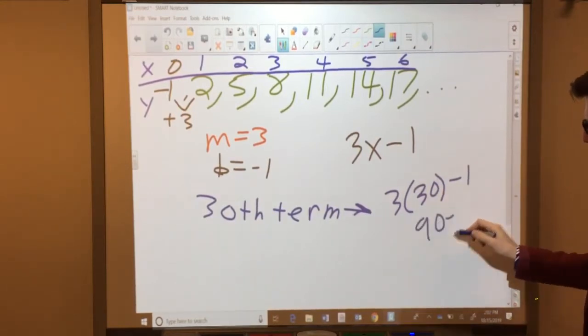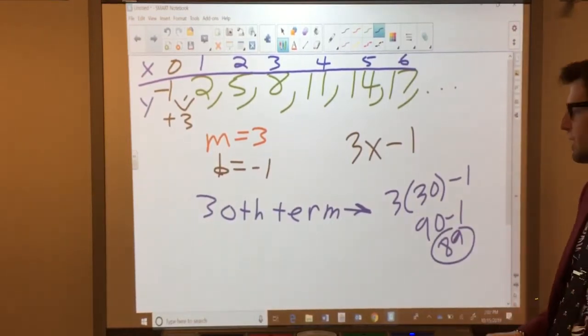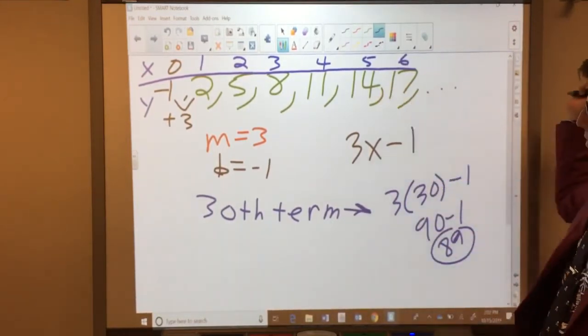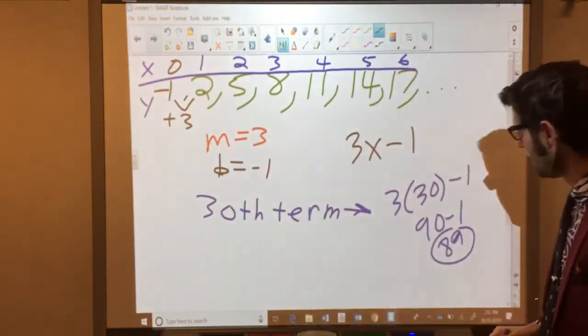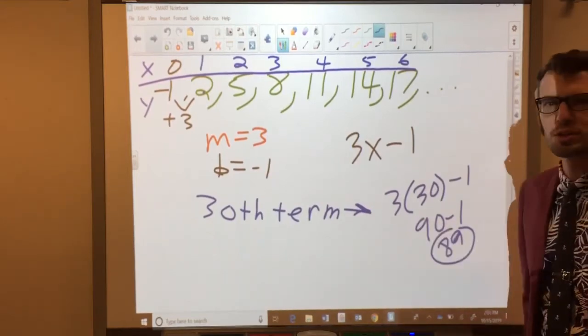Well, 3 times 30 is 90. Minus 1 gives us 89. And if you're not doing anything this afternoon or evening or whatever you're watching this, maybe you want to sit there and write out 30 terms of this, starting with 2 as our first term, and see if you do get 89 for that. But I think you can trust me that this expression is sound.